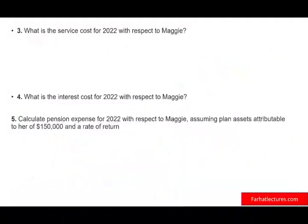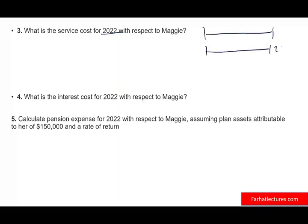The third question is: what is the service cost for year 2022? Service cost is how much additional obligation arises because Maggie worked one additional year. We use the new rate: 1.8 times one year times her expected future salary of $325,000. Therefore, the annual service cost is $5,850.